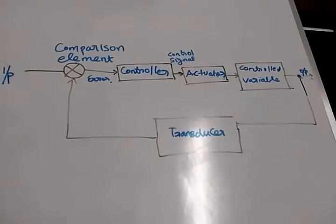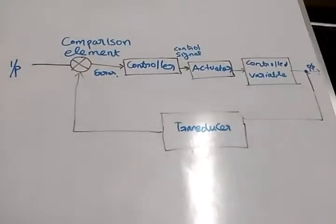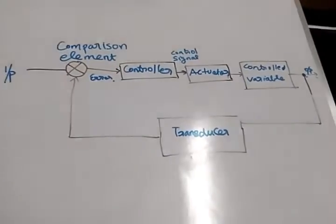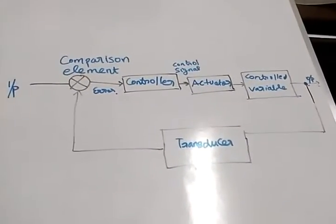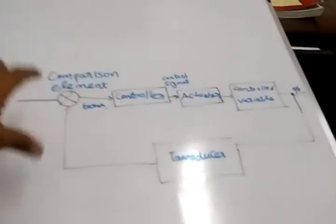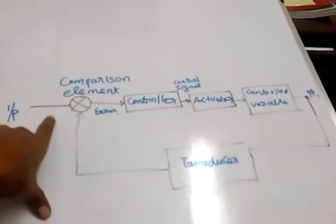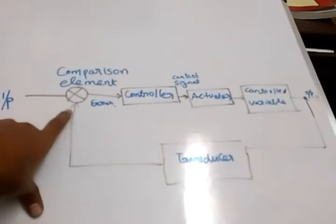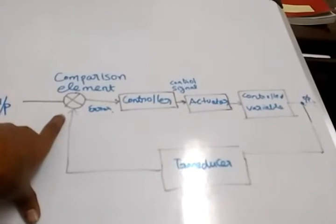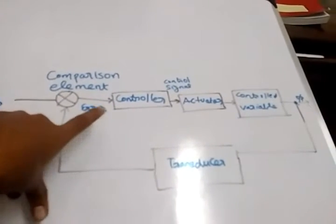This is the circuit diagram, that is, this is the flow chart of this automatic control system. Here we could see that the input value is compared with the output value using comparison element and the error signal is sent to the controller.